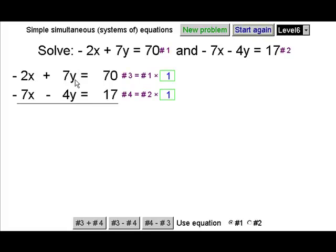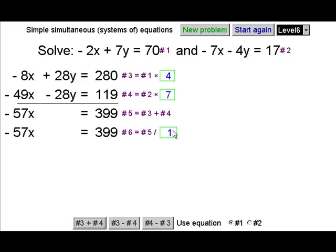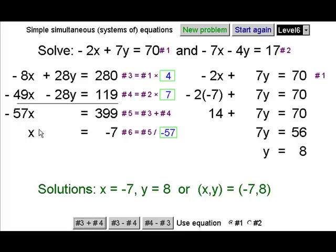And we could have got the same way by eliminating the y's by multiplying the top by 4 and the bottom by 7 this time. And now subtracting, no, forgive me, by adding the two we can eliminate the y's. And this time if we divide through by minus 57, once again we'll get our x value leading on to our y value.